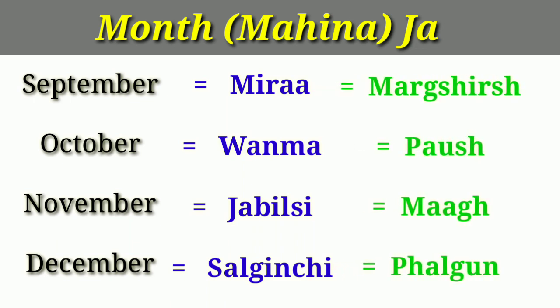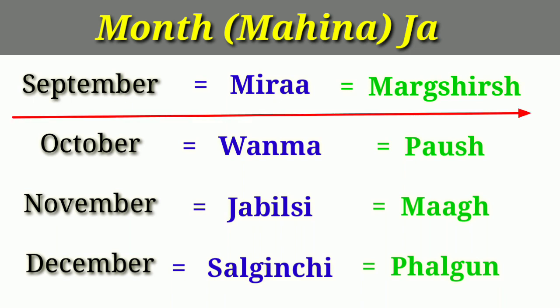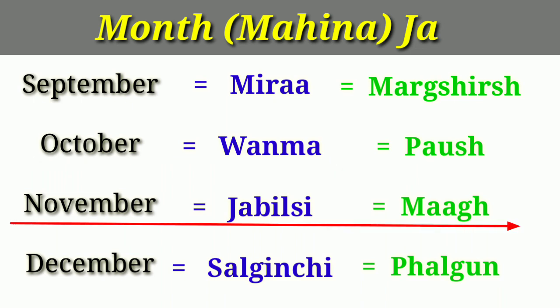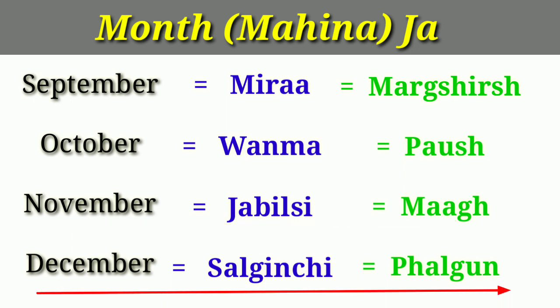In Hindi: September — Margashish, October — Pausch, November — Mag, December — Falgun. So the full set: September: Meera — Margashish. October: Wanma — Pausch. November: Jabalsi — Mag. December: Salganchi — Falgun.